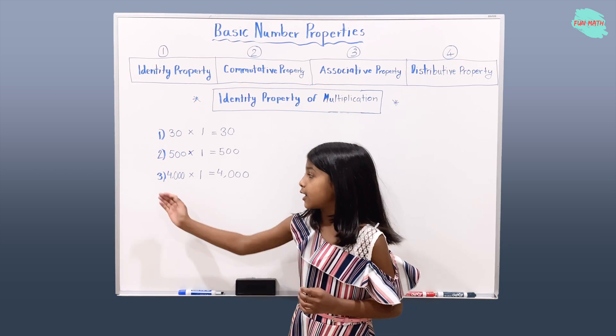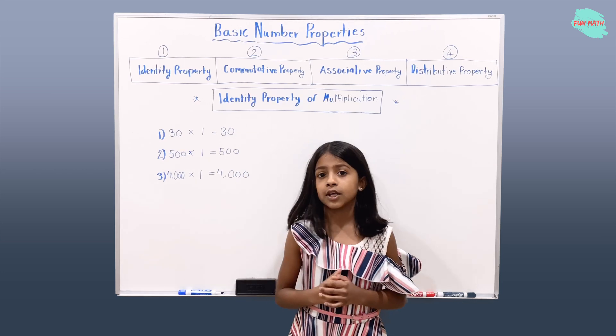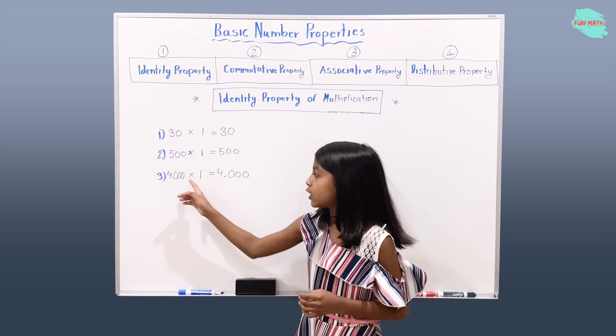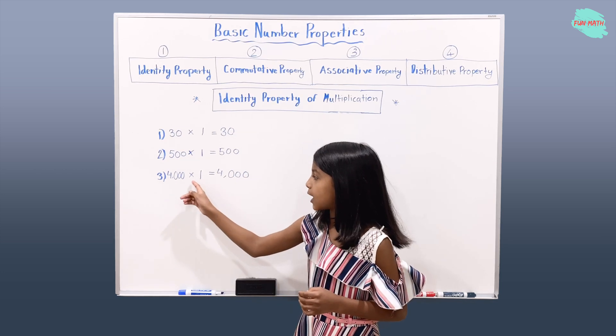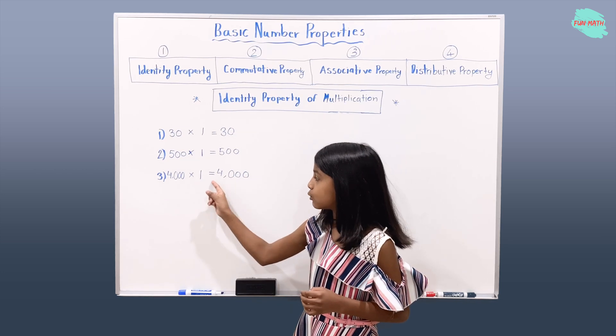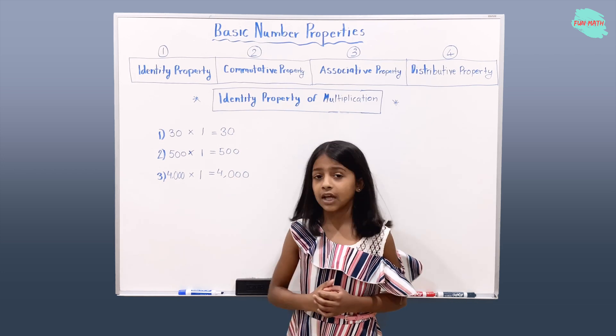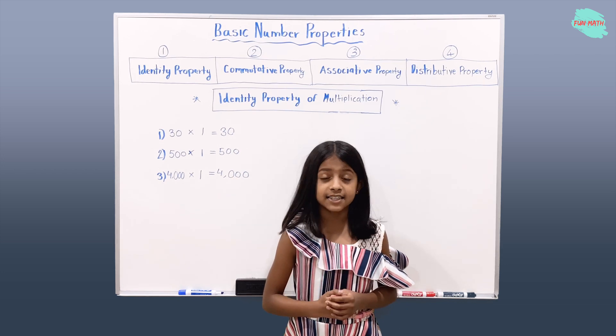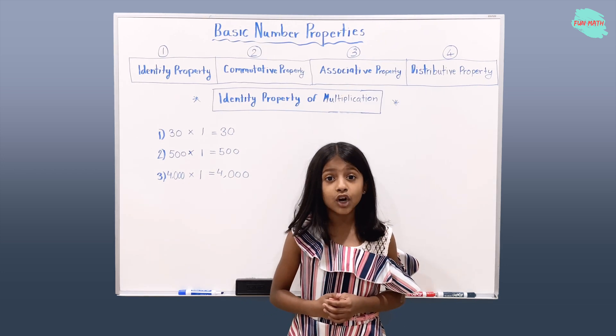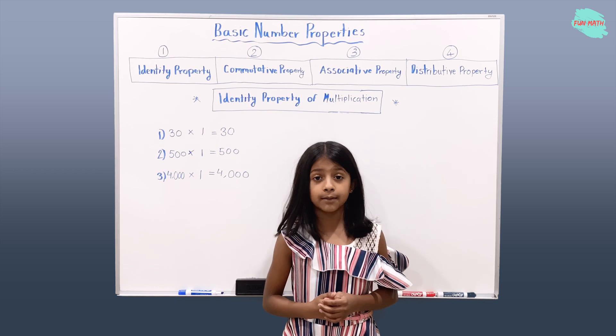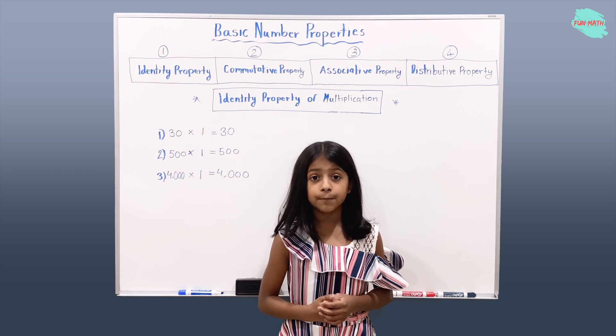Example 3: 4,000 times 1 equals 4,000. 4,000's identity did not change after multiplying by one.